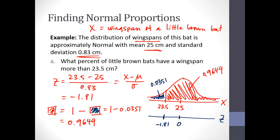The question asked for a percent, so the answer is 96.49% of little brown bats have a wingspan of more than 23.5 centimeters. In general, you can give either the percent or the proportion — 96.49% equals 0.9649 in decimal form.